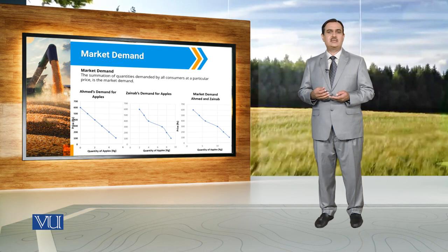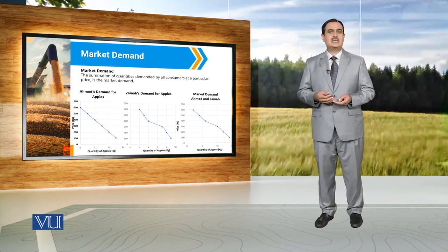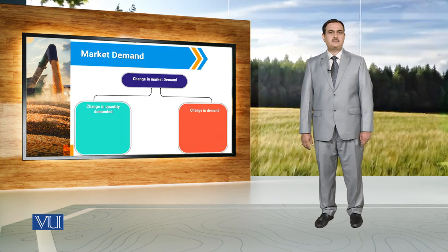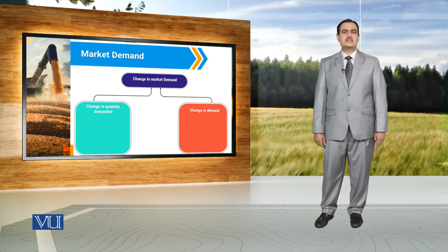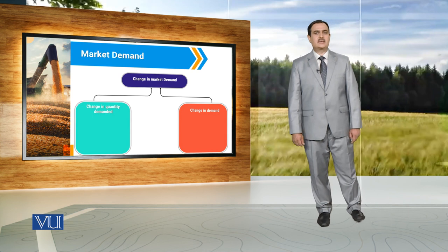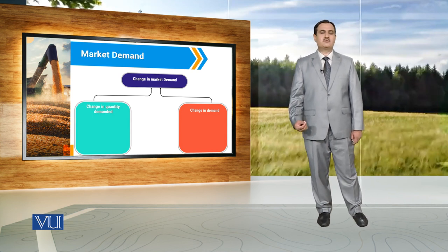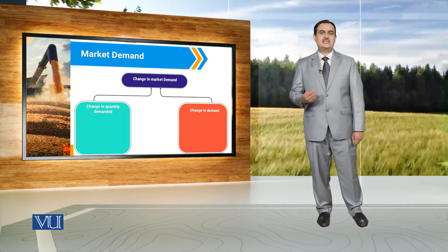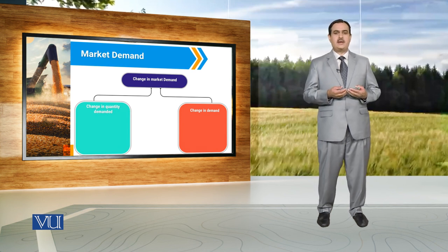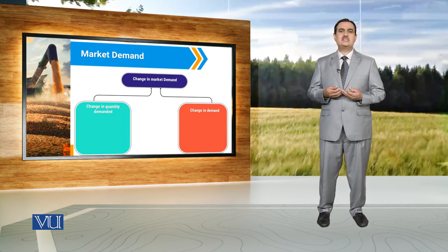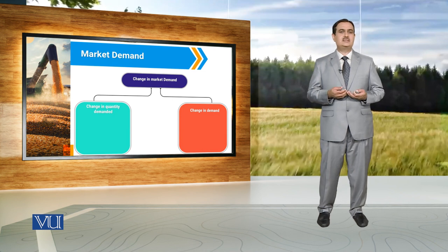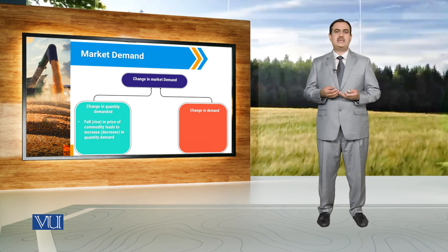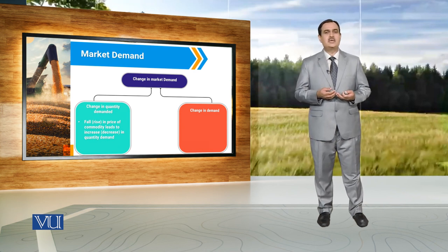Market demand is, in fact, the demand by all the individuals in a particular market. Whenever we make a discussion about change in market demand, there are two types of changes. We call one change as change in quantity demand and the other one as change in demand. Change in quantity demand is because of change in price of that particular commodity.